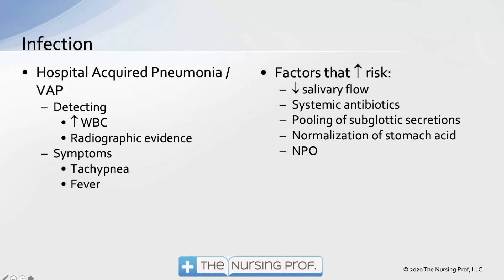A common complication associated with endotracheal tubes and mechanical ventilation is hospital-acquired pneumonia, otherwise known as ventilator-associated pneumonia or VAP. To find it, we look for an increase in the patient's white count and radiographic evidence. Symptom-wise, we could see tachypnea, fever, and cough with sputum may also be present.